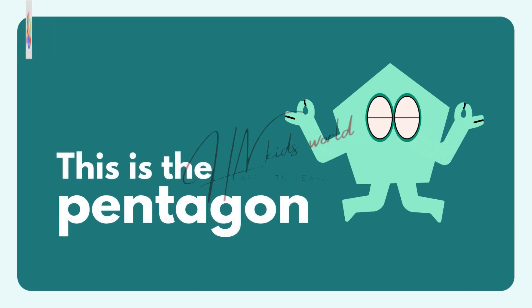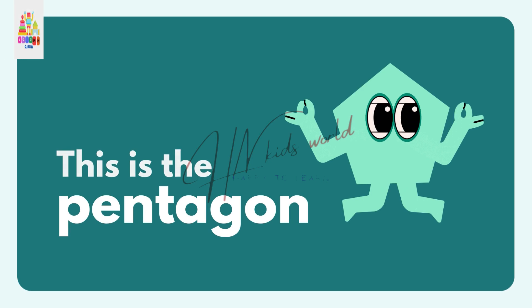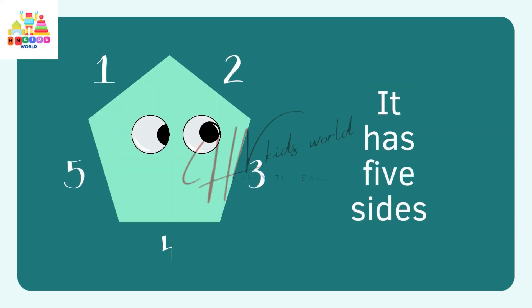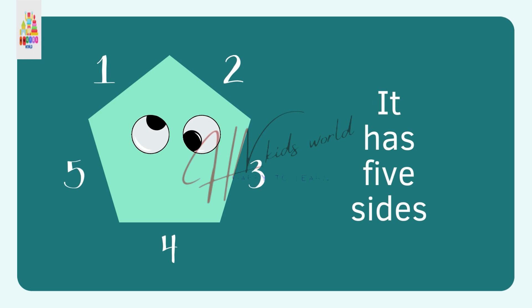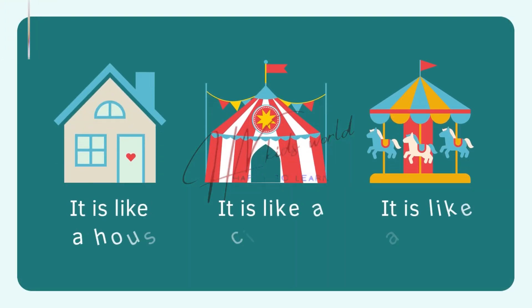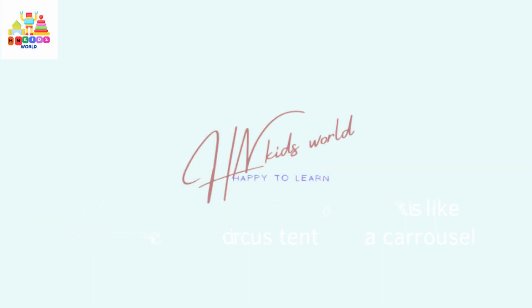This is the pentagon. It has five sides. It is like a house, like a circus tent, or a carousel.